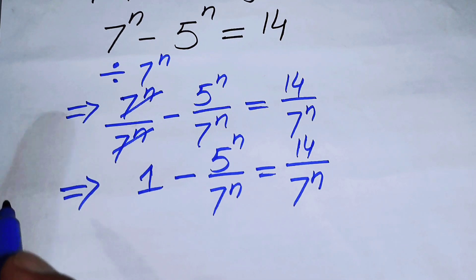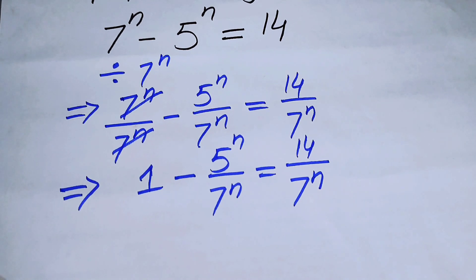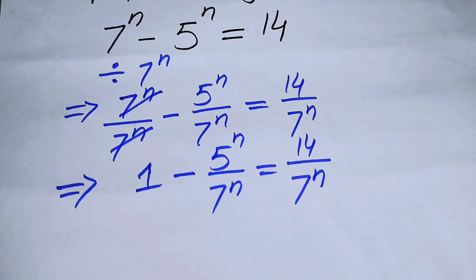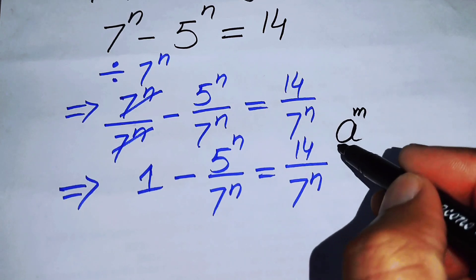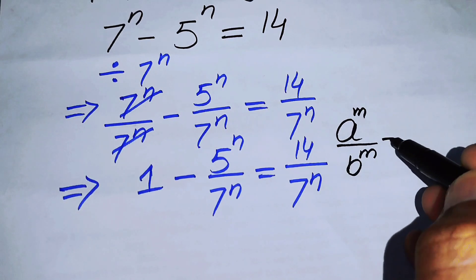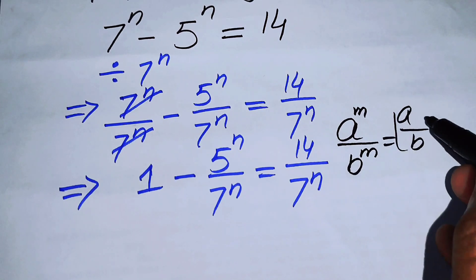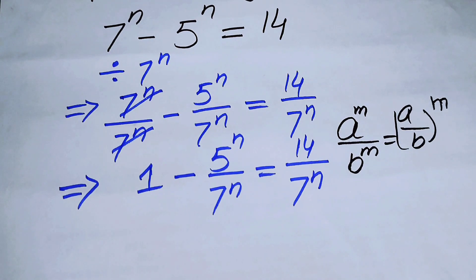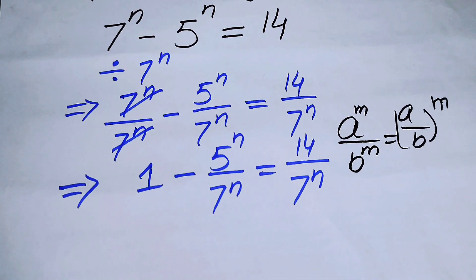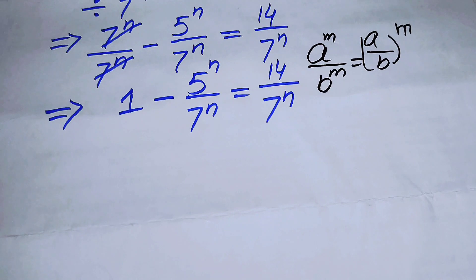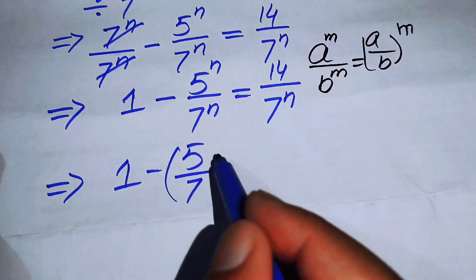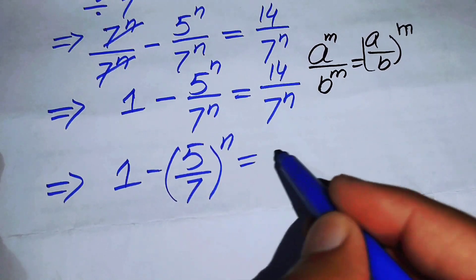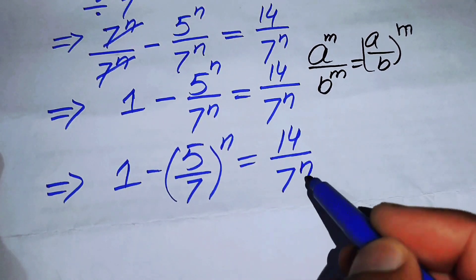Now we apply the exponential law on the left hand side. We know that a^m over b^m equals (a/b)^m. Using this law, 5^n over 7^n becomes (5/7)^n, so we get 1 minus (5/7)^n equals 14 over 7^n.